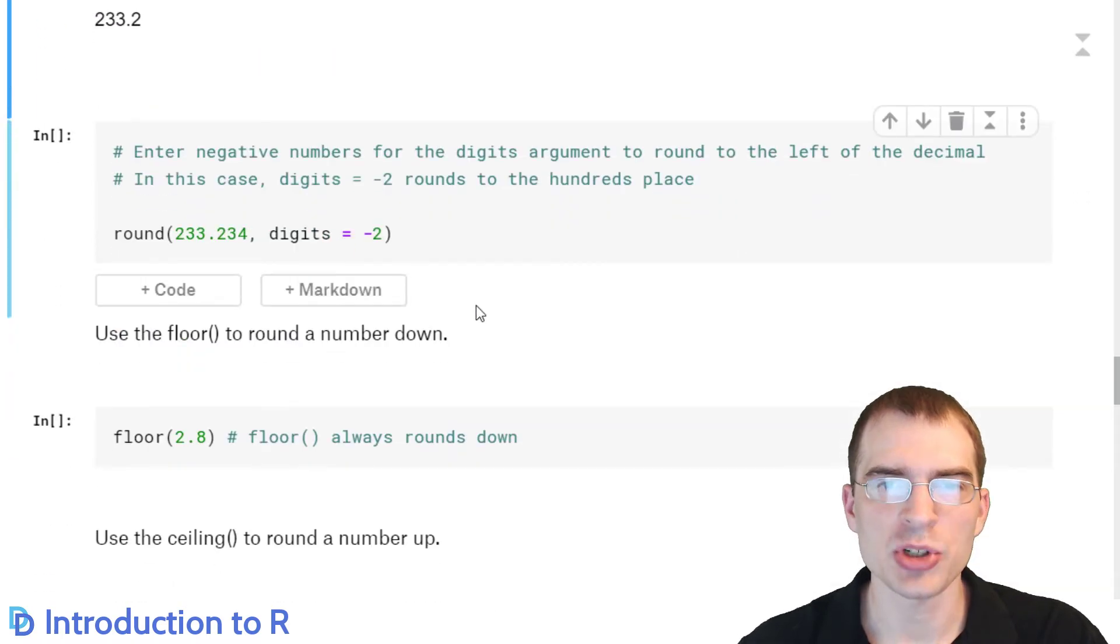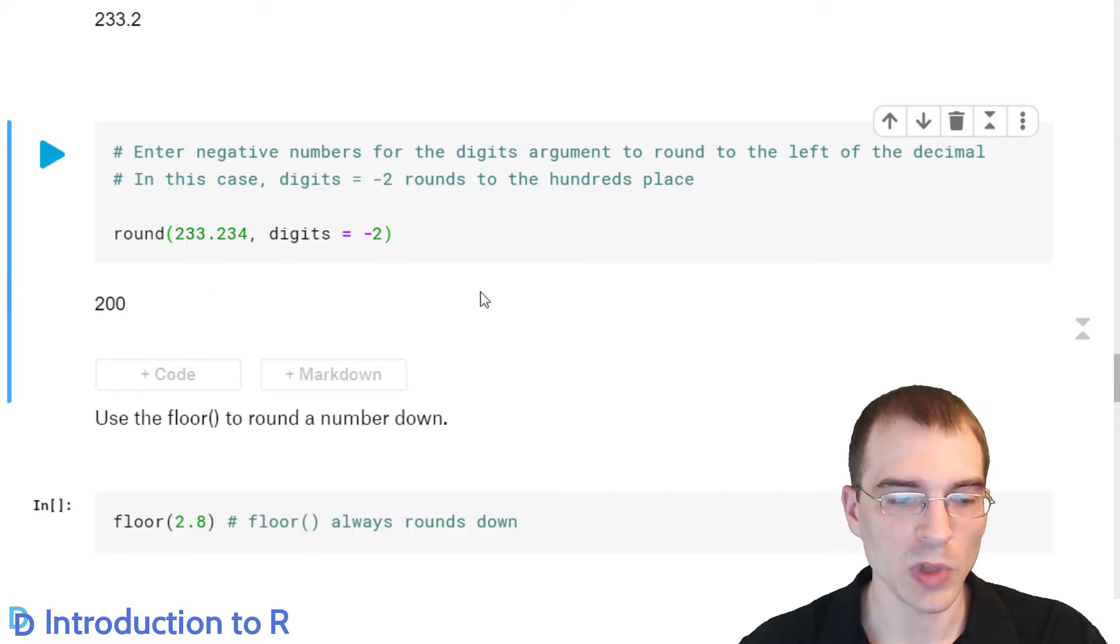And you can also round in the opposite direction of the decimal point by using negative numbers. So for instance, if we want to round maybe a very large number and leave a bunch of zeros at the end of it, you can do that with rounding with a negative. So in this case, we're rounding to negative 2, which means we'll cut off everything after the decimal place, but then we're rounding two places before the decimal. So we're going to be rounding to the hundreds place here. So this should round to 200. There we go.